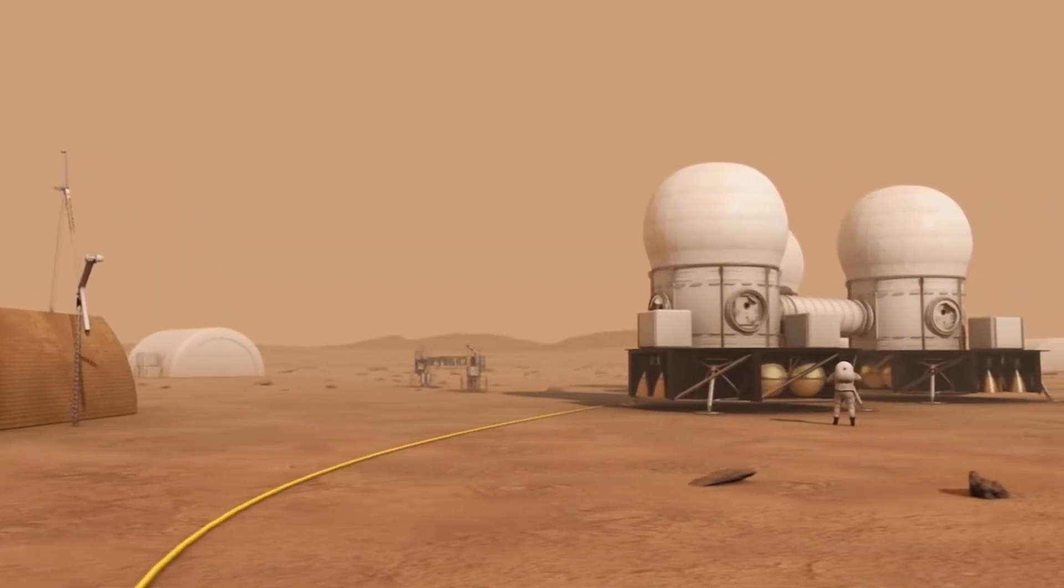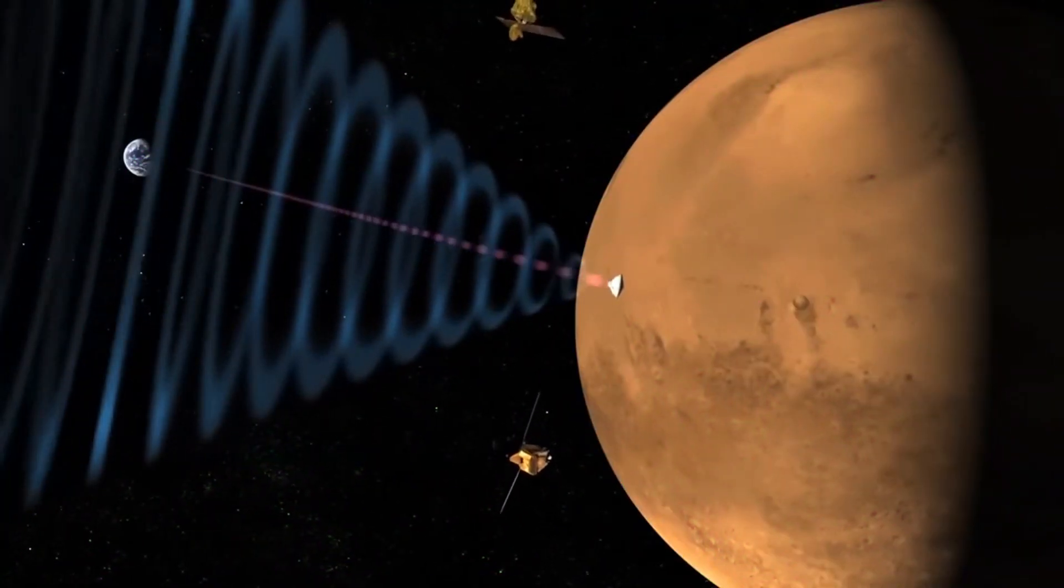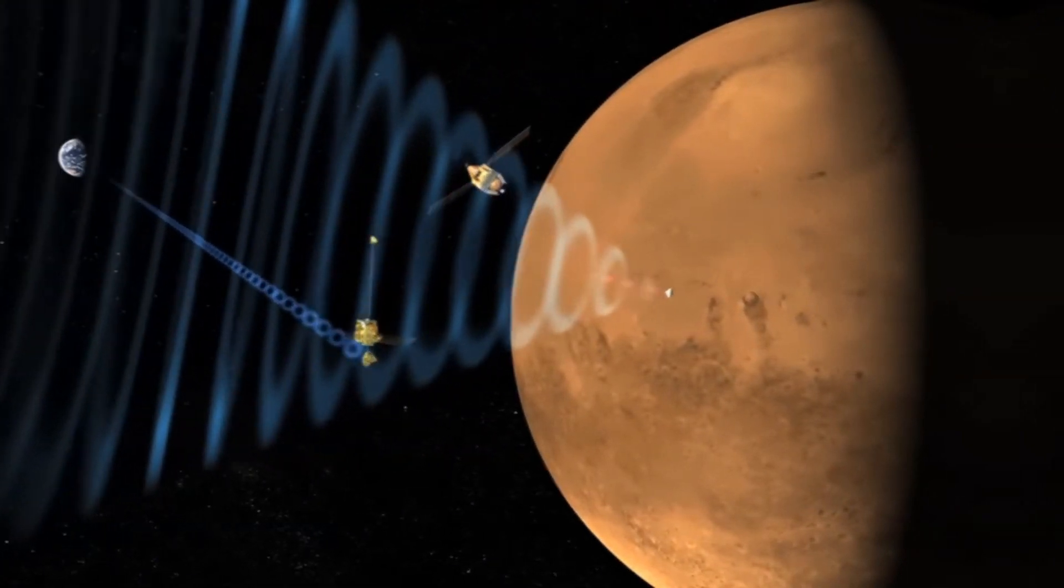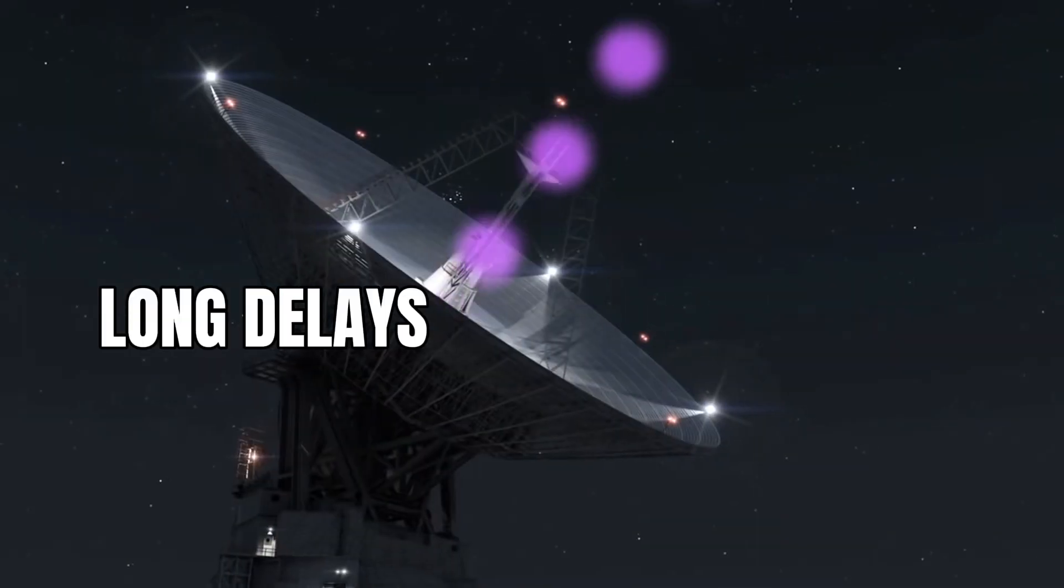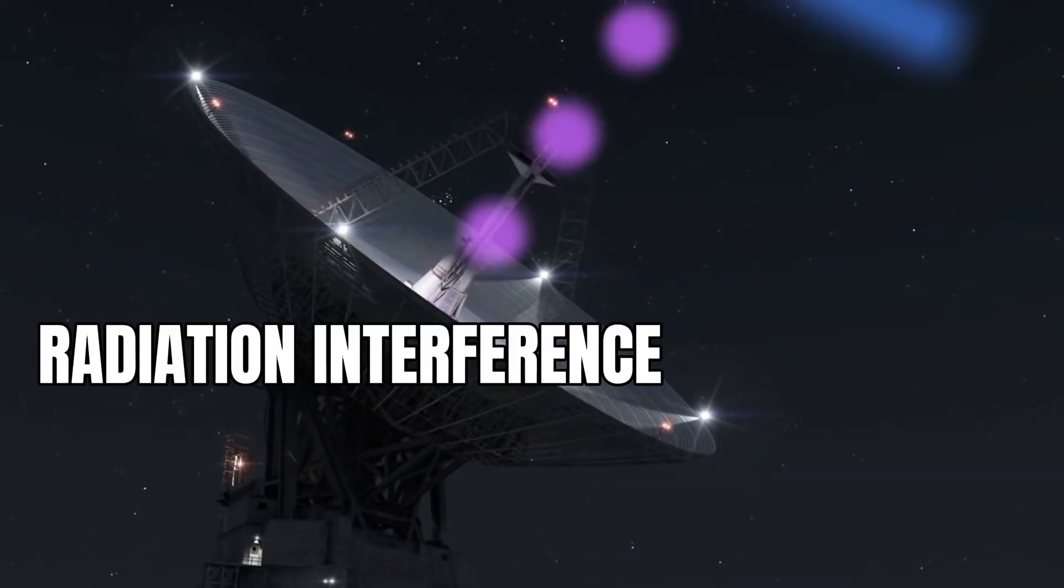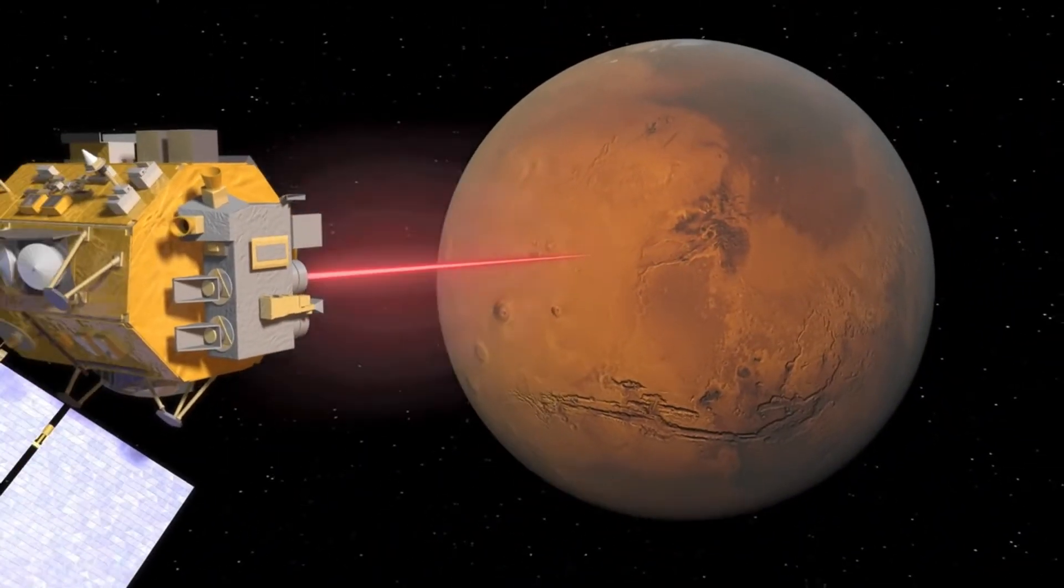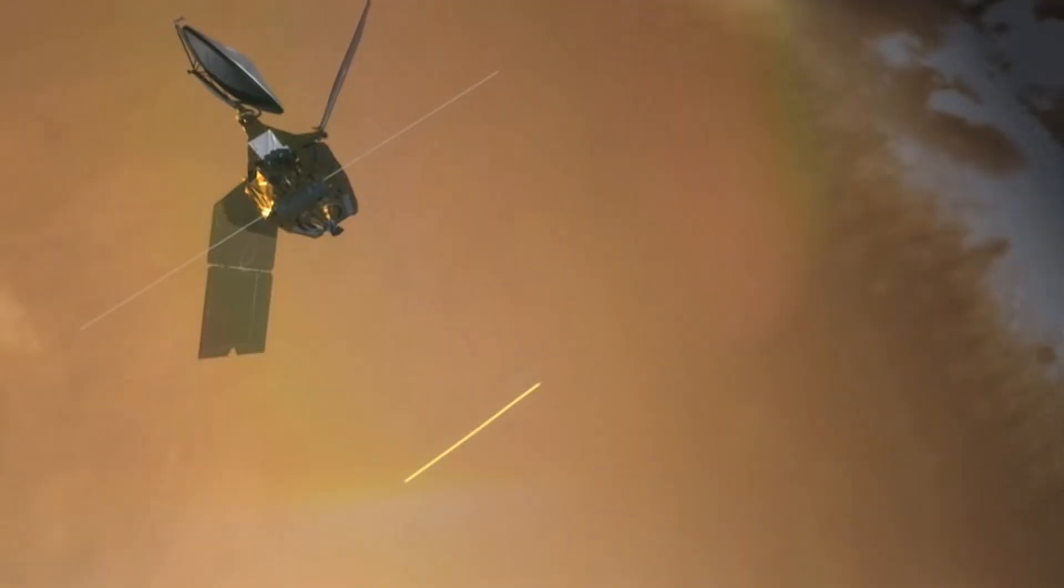What is the interstellar internet? The interstellar internet is a cutting-edge communication network designed to connect planets, spacecraft, and colonies across the vast distances of space. It tackles unique challenges like long delays, radiation interference, and the need for robust infrastructure. It's the key to enabling seamless interplanetary communication and exploration.